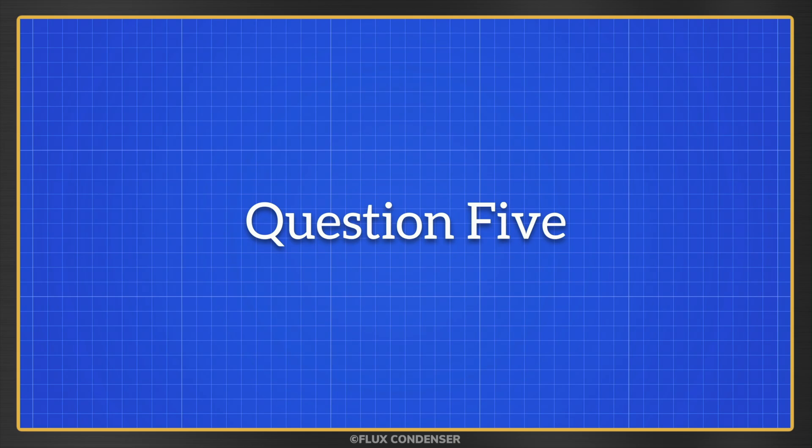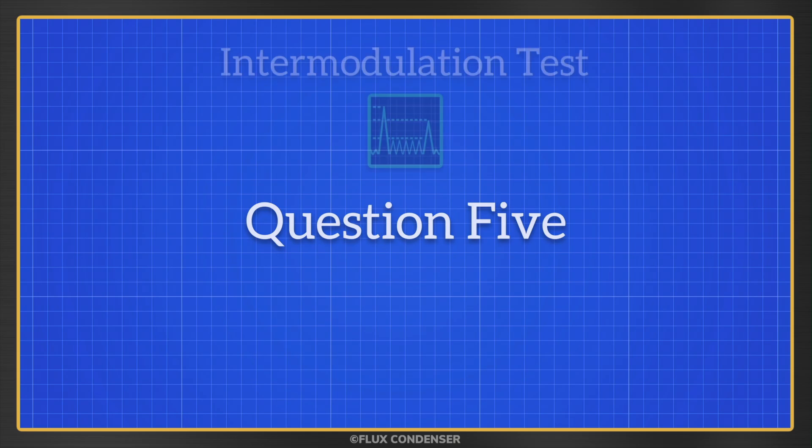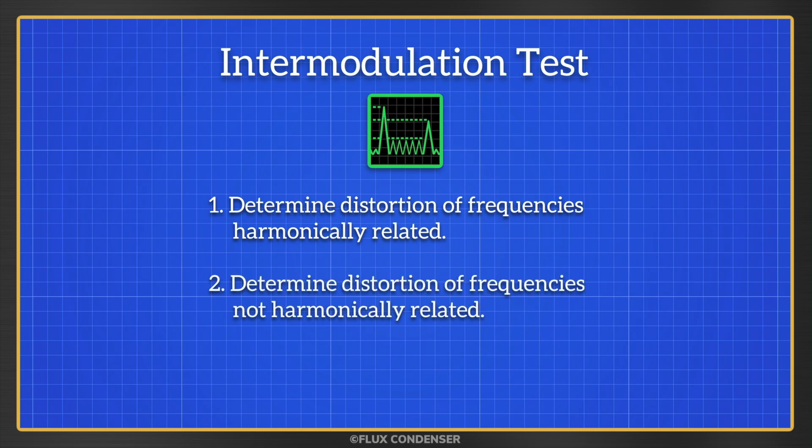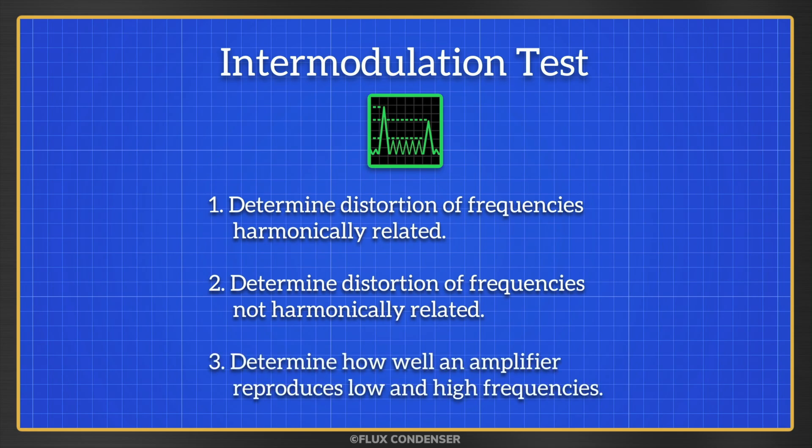Okay, moving on to our final question, number 5. The objective of an intermodulation test is 1. To determine how much distortion there is of frequencies that are harmonically related. 2. To determine how much distortion there is of frequencies that are not harmonically related. Or 3. To determine how well an amplifier reproduces both low and high frequencies.